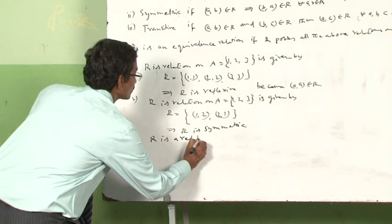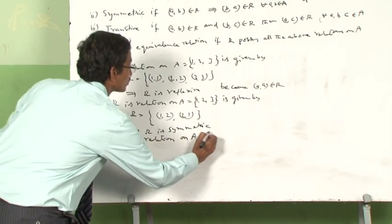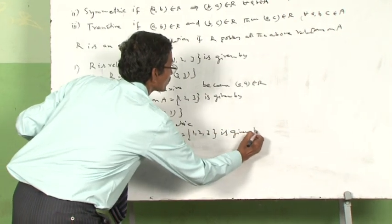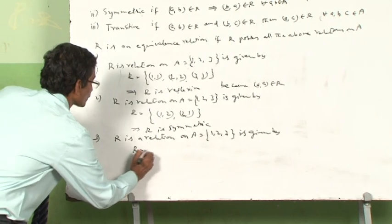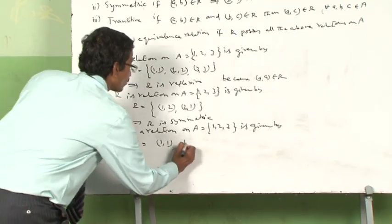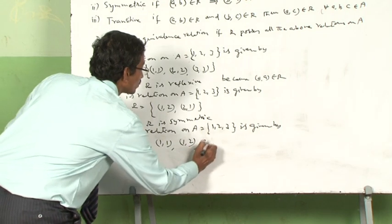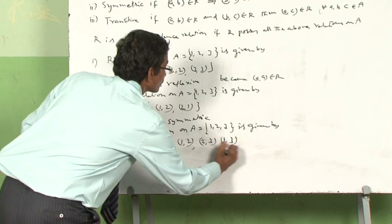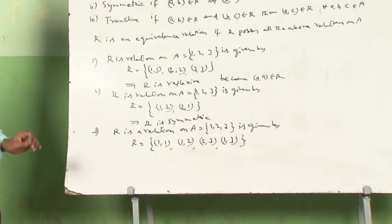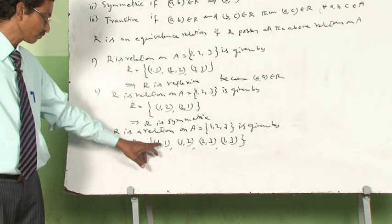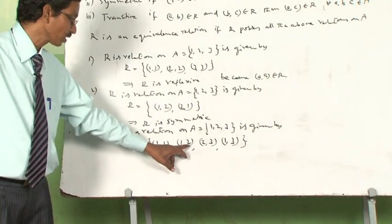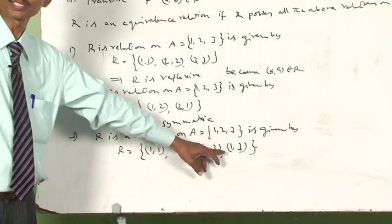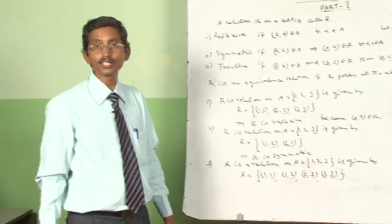R is a relation on set A = {1, 2, 3} given by R = {(1,1), (1,2), (2,3), (1,3)}. Here, (1,2) belongs to R and (2,3) belongs to R, then (1,3) also belongs to R — it is in the set. So this relation is a transitive relation.